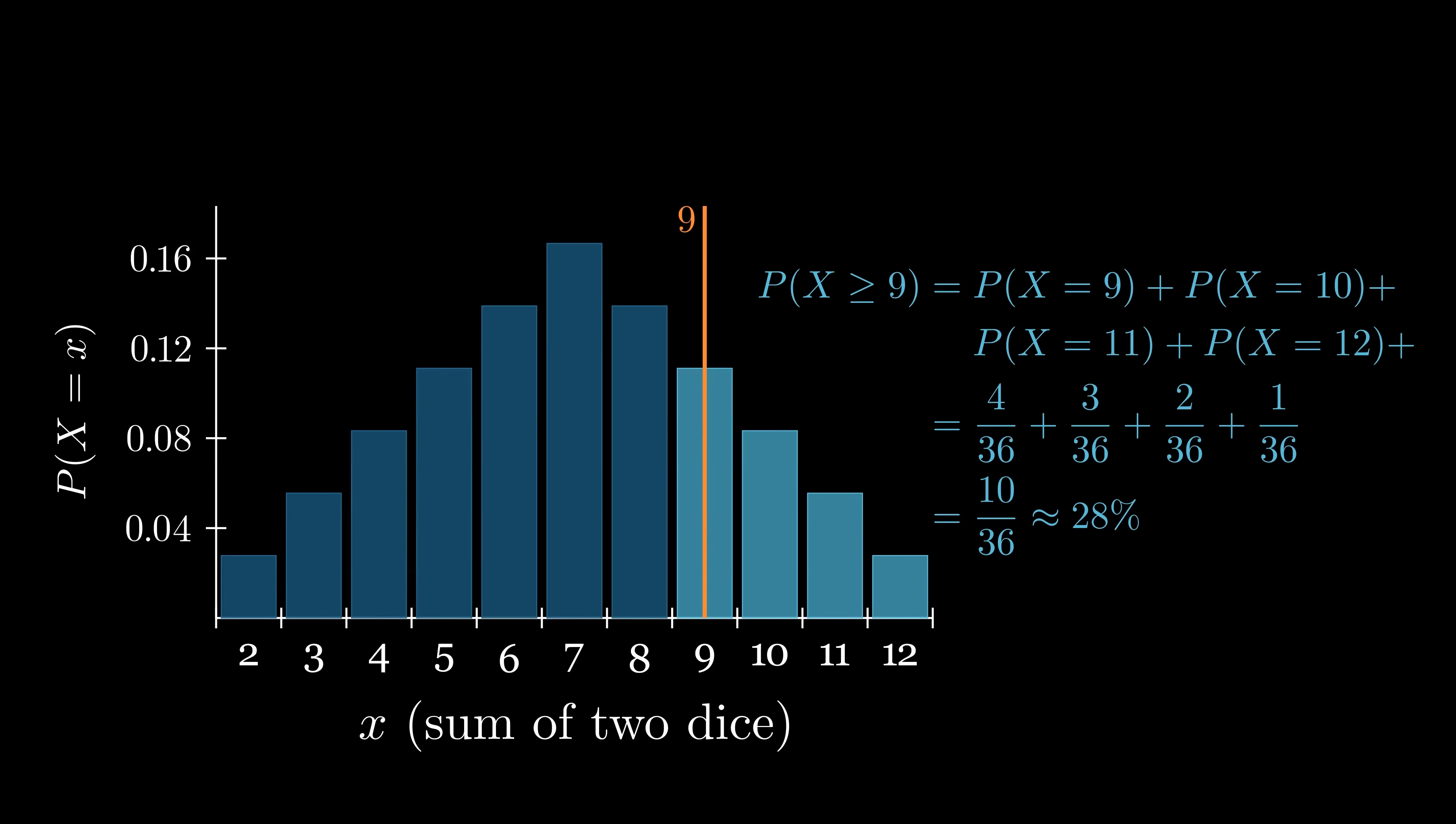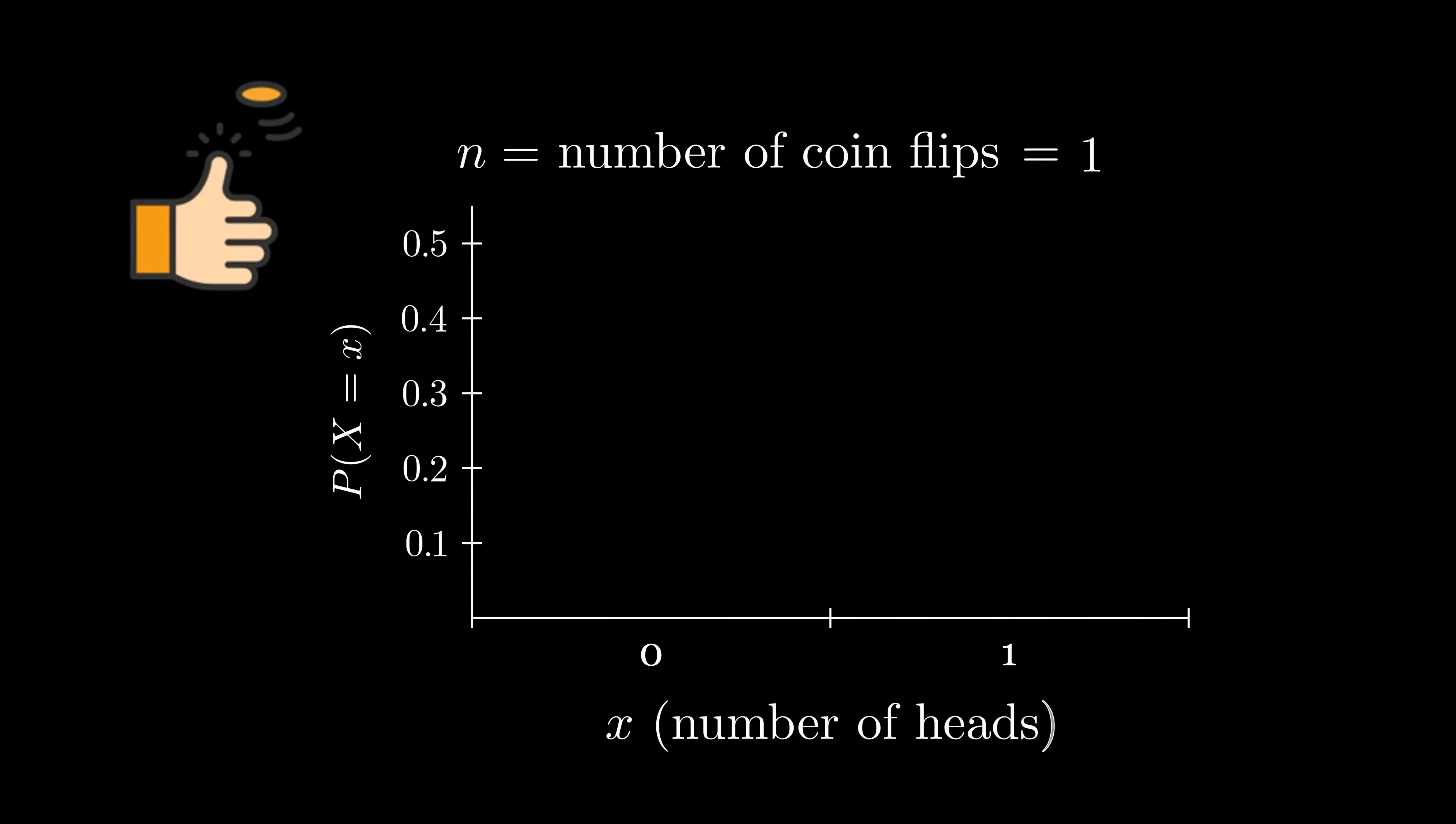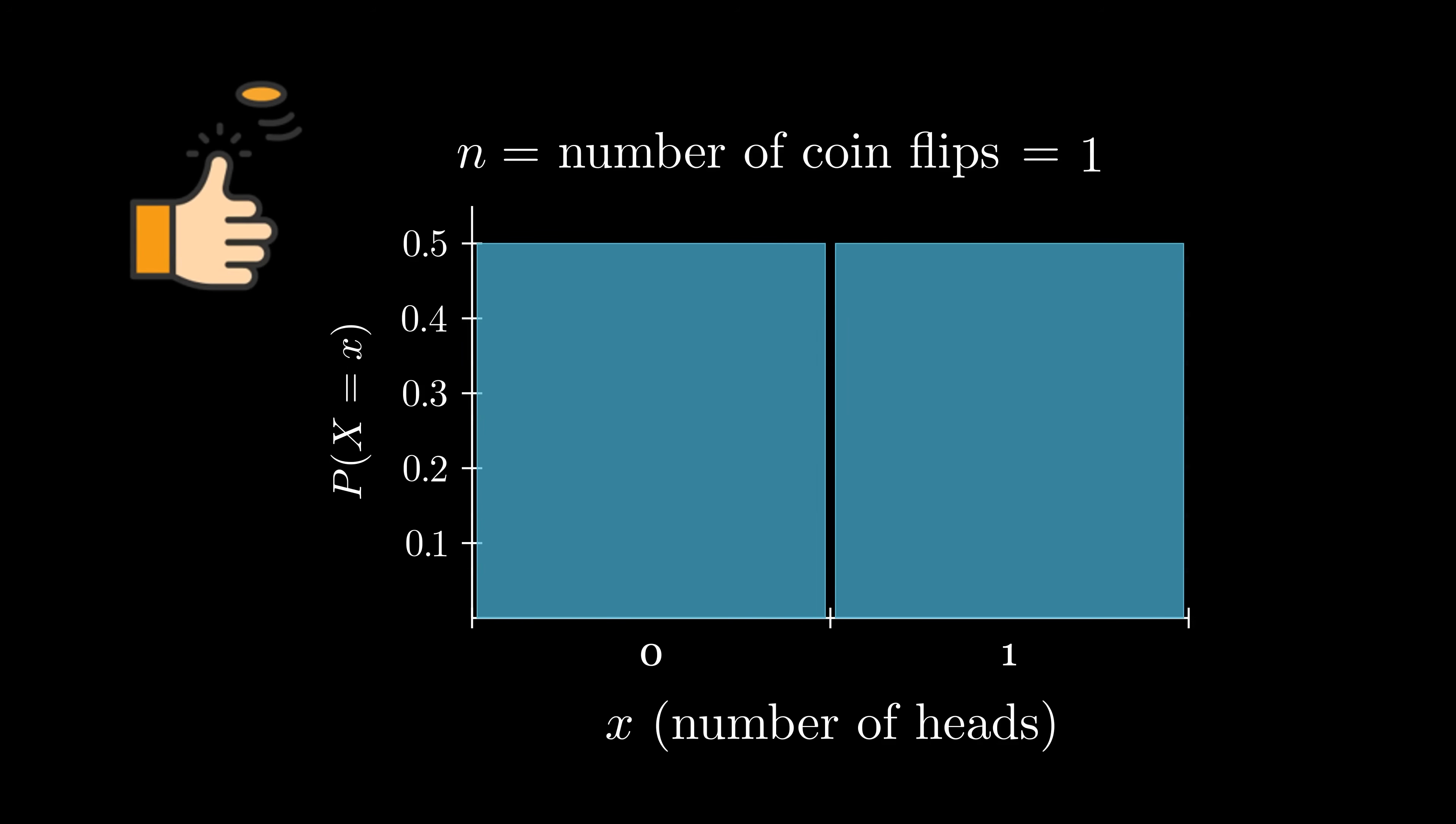Now, let's go backwards and imagine an even simpler situation, flipping a single coin. If the coin is fair, we have a 50% chance to land on tails, and a 50% chance to land on heads.